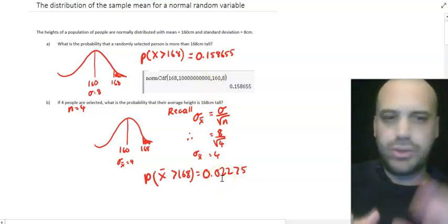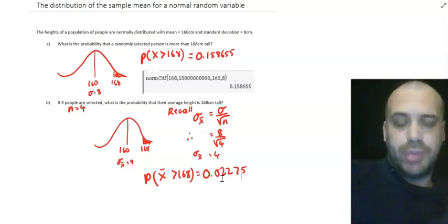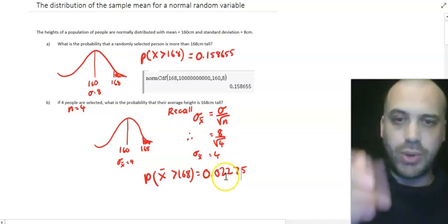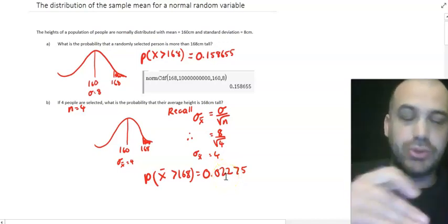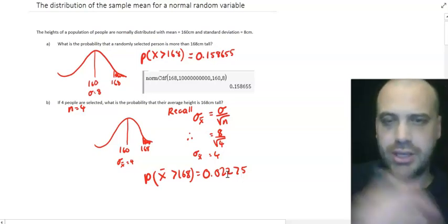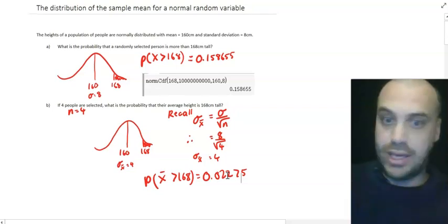But because we're picking randomly, there's a chance that we'll pick a bunch of tall people. And in this case, there's only a 2% chance that we will pick a bunch of people whose average heights are above 168. So that's the interpretation there. That's it. Go forth.